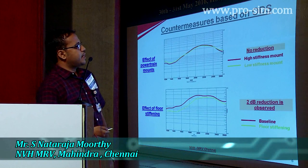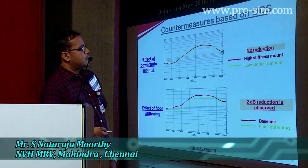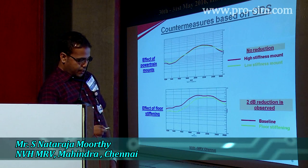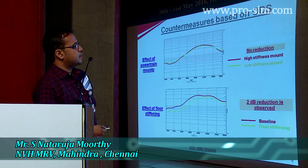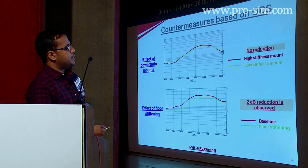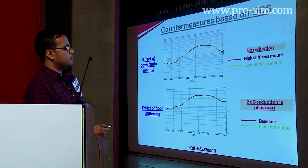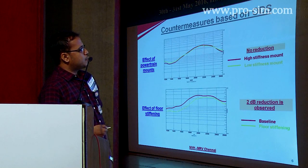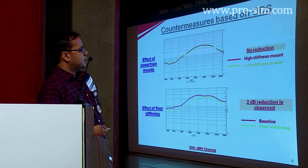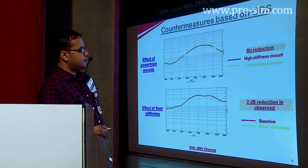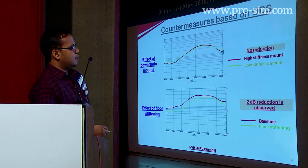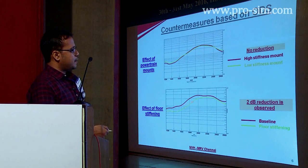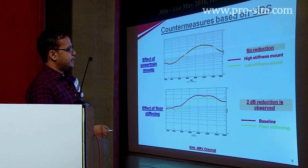These are some countermeasures which we have taken based on the ODS. As mentioned earlier, the first order vibration levels were dominant in the seat and steering. The first trial was done with respect to stiffness of the mount — at our problematic zone, the stiffness didn't have any effect. The next trial was to stiffen the floor by increasing the section modulus of the floor. We got a reduction of around 2 dB, but at the problematic zone we didn't get that much reduction.